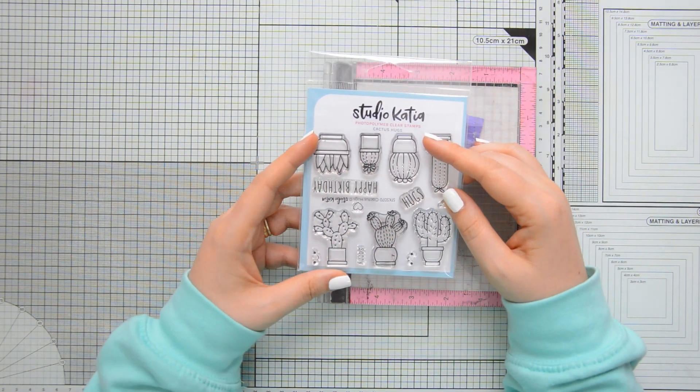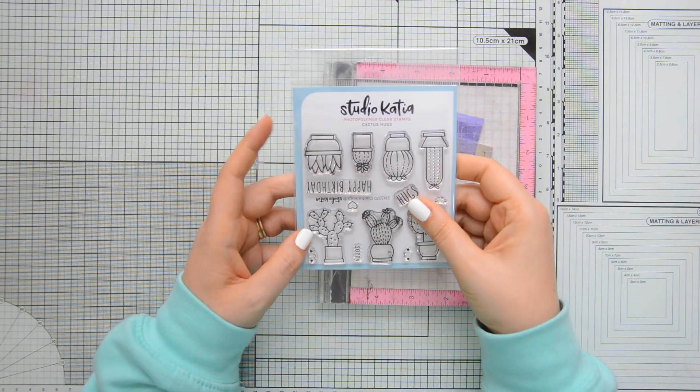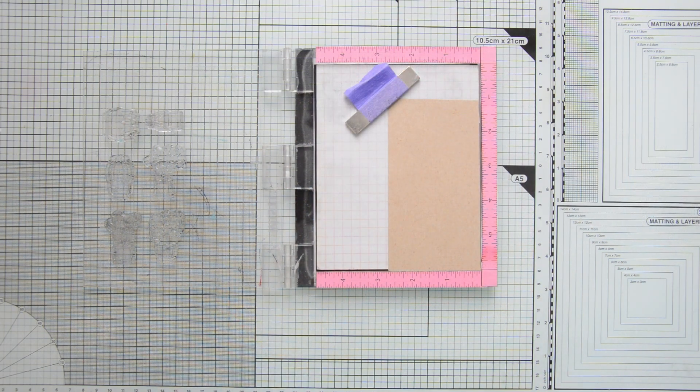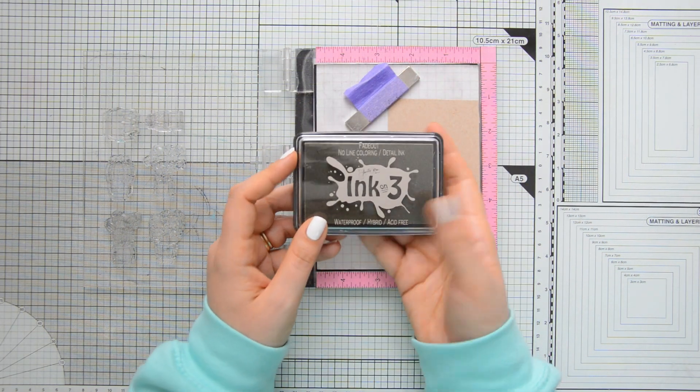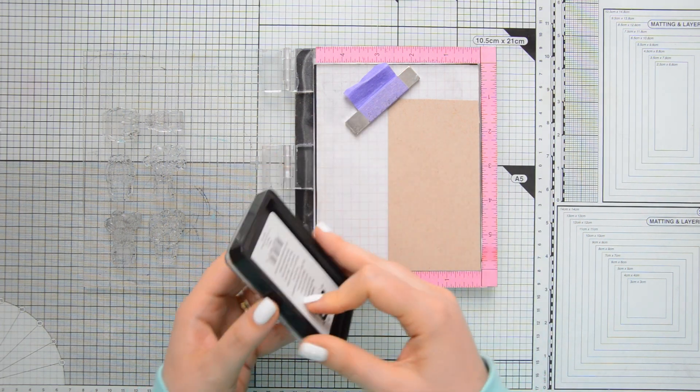The images that I chose today are part of the Cactus Hugs stamp set. It's really cute with all these cacti images and it also has some smiley faces. I didn't use them today but they're going to add a touch of cuteness to your cards.